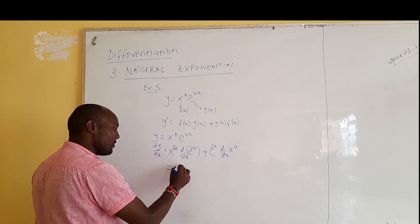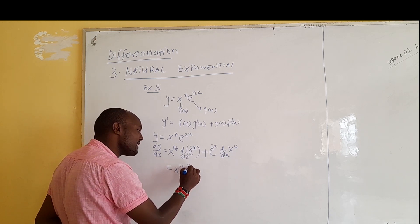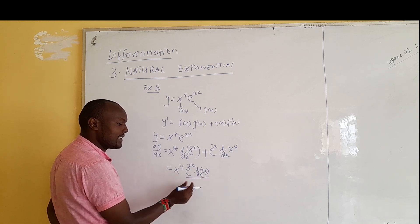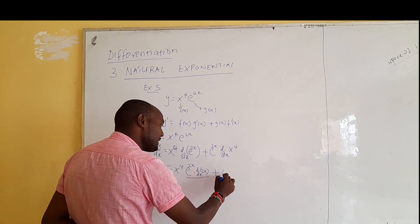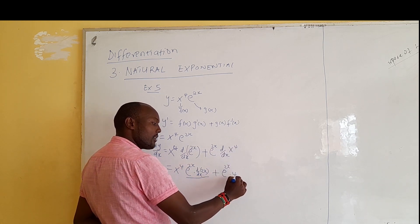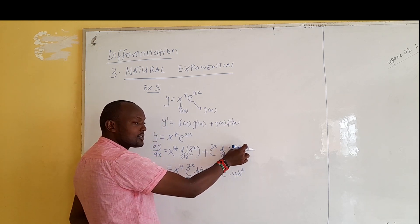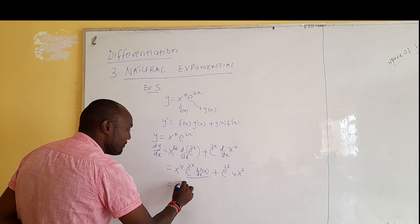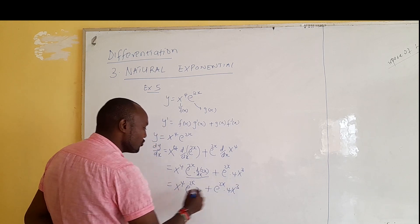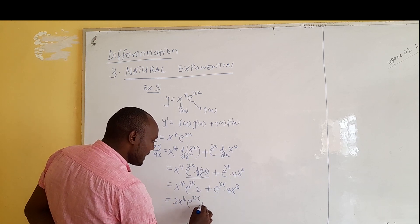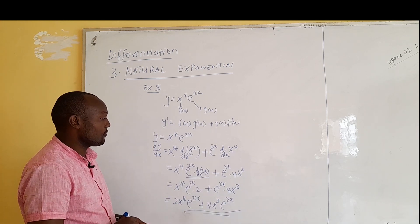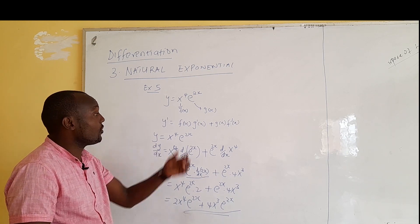So we get x⁴ times the derivative of e^(2x). Since e^(2x) remains the way it is and we differentiate the power 2x to get 2, that gives x⁴·e^(2x)·2. Plus e^(2x) times the derivative of x⁴: bring the 4 down to get 4x³. So the result is 2x⁴·e^(2x) plus 4x³·e^(2x). You may simplify further by factoring out the common term.